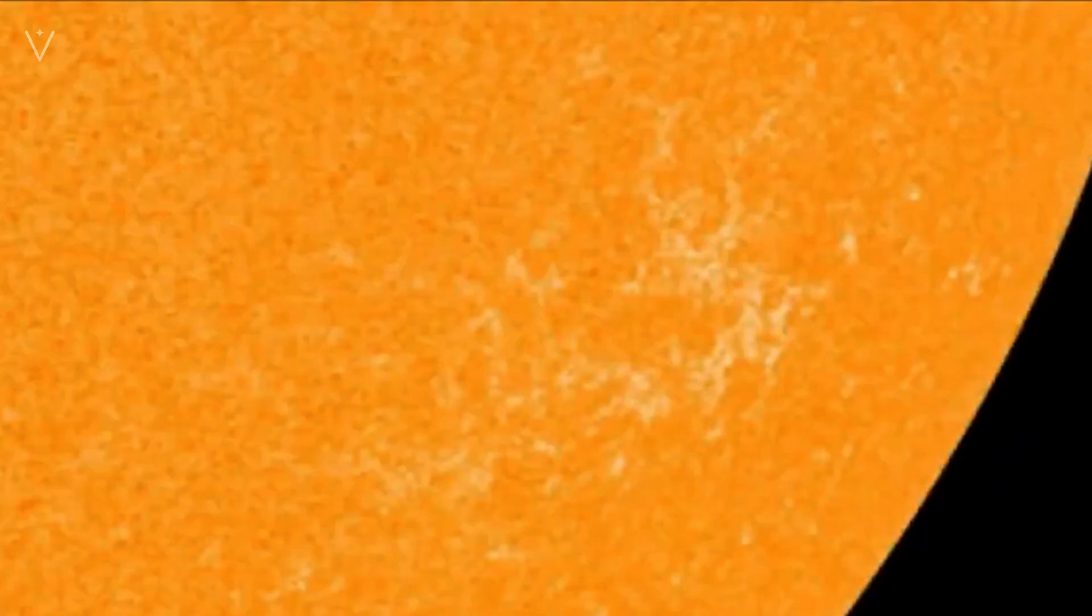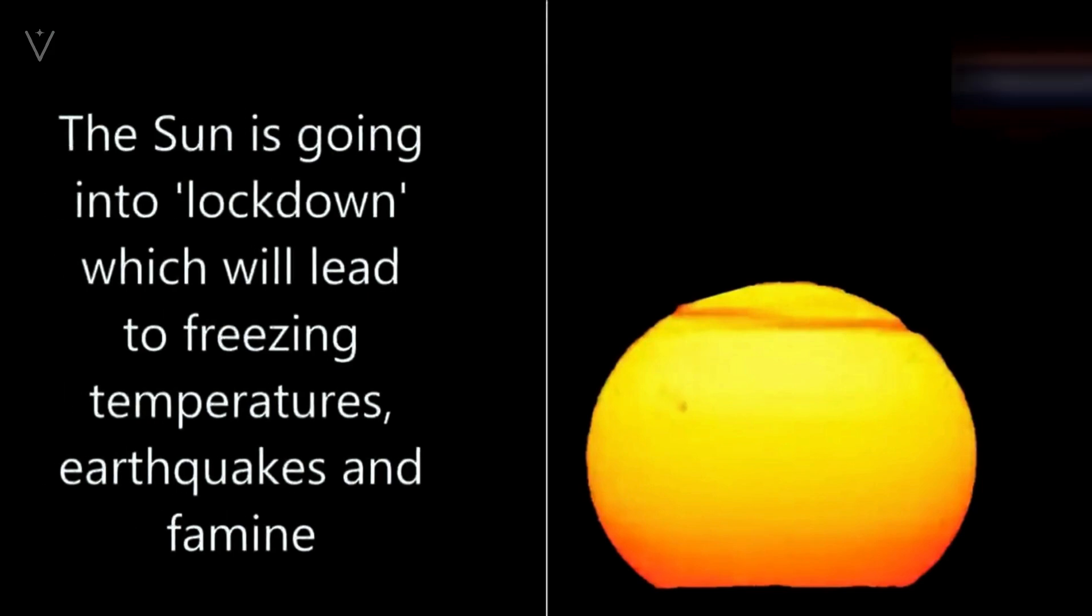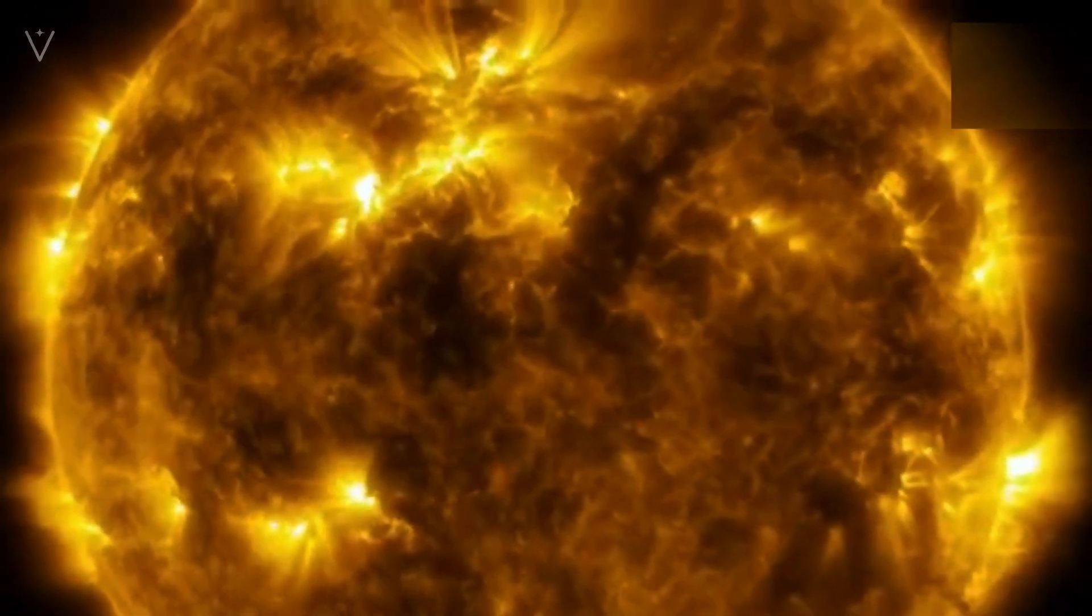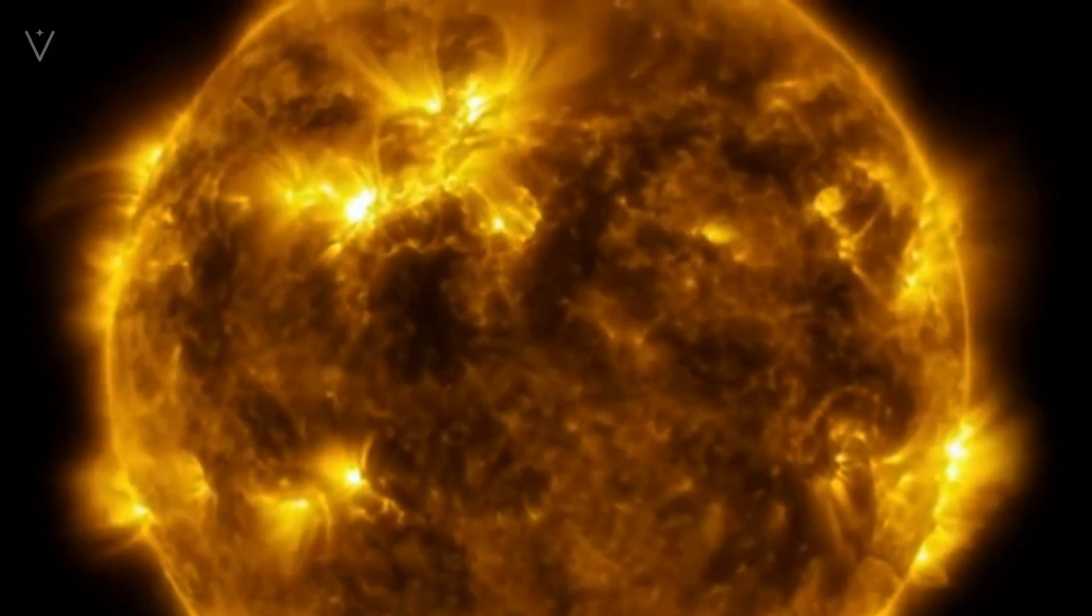However, facing 4,000 trillion tons of water, the scenario changes dramatically. Although the Sun releases enormous heat, it can only vaporize a small fraction of this colossal water mass. The majority of the water, under the influence of powerful gravity, would rapidly condense and form a water layer tens of thousands of kilometers thick around the Sun. This sudden water layer would significantly lower the Sun's surface temperature and block its radiation, making it appear extinguished from an external perspective.